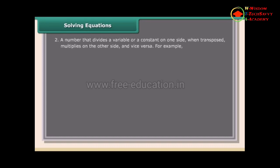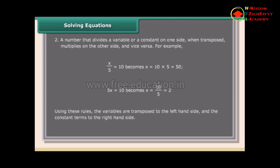A number that divides a variable or constant on one side, when transposed, multiplies on the other side, and vice versa. For example, x/5 = 10 becomes x = 10 × 5 = 50; and 5x = 10 becomes x = 10/5 = 2. Using these rules, variables are transposed to the left-hand side and constant terms to the right-hand side.